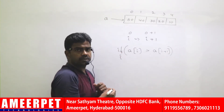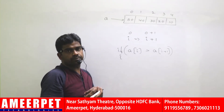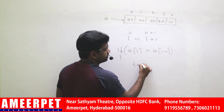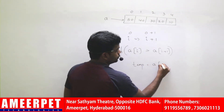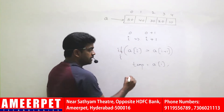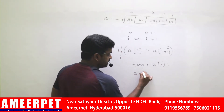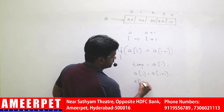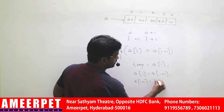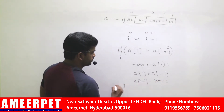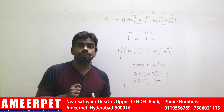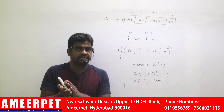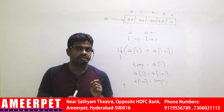How can we swap? You can use either a third variable or without using the third variable. I am using the third variable. One temporary variable I am taking. Into that I am storing the index element. Into that index element, I am storing the next element. Into that next location, I am storing the temporary element. This is the basic step we need to understand — how can we swap the index element with the next element by comparing them. This is the first step.